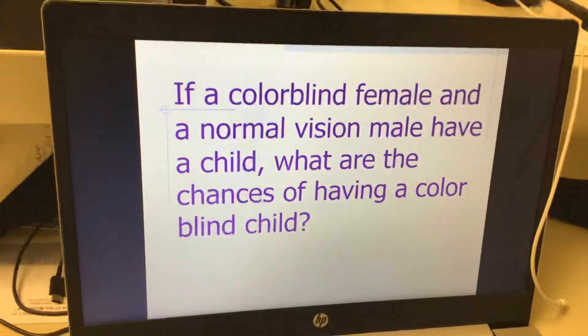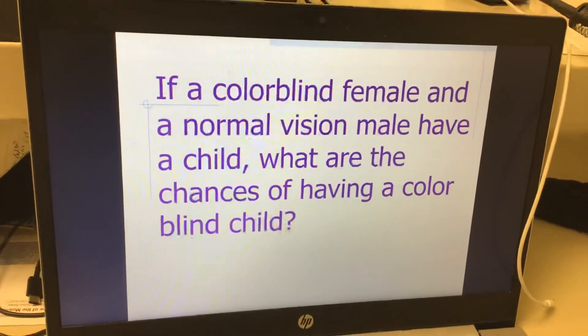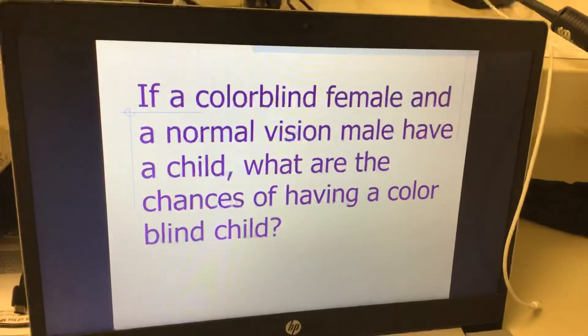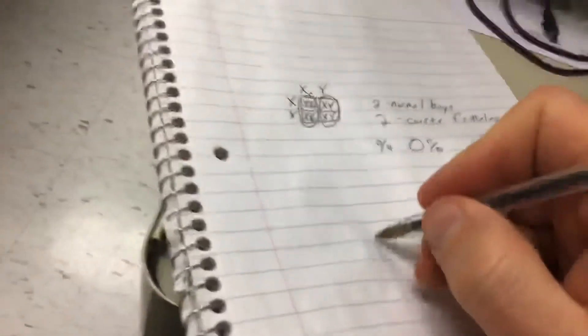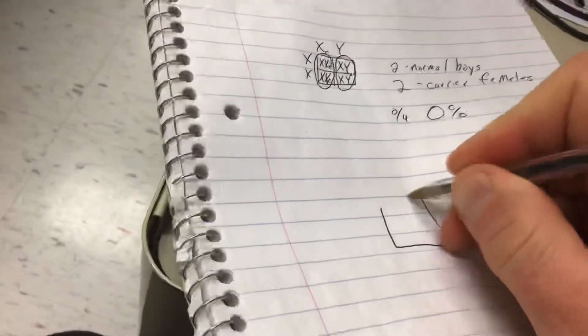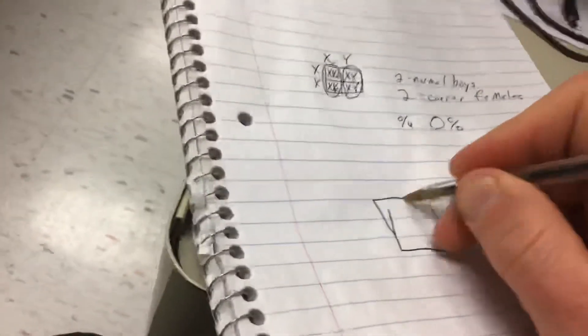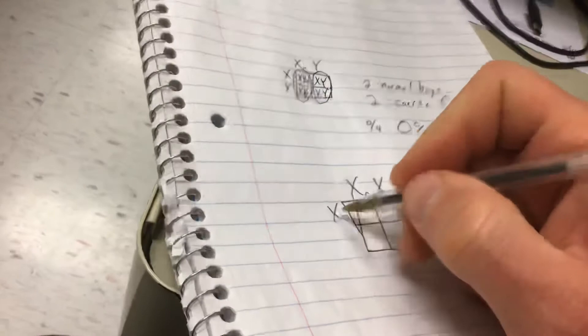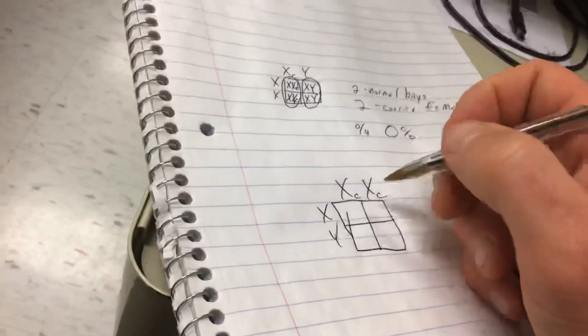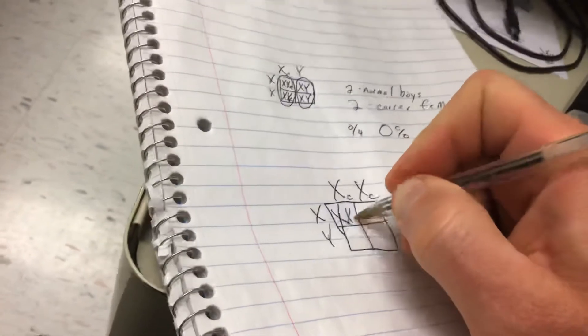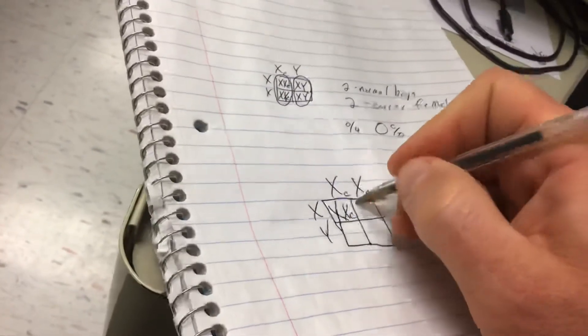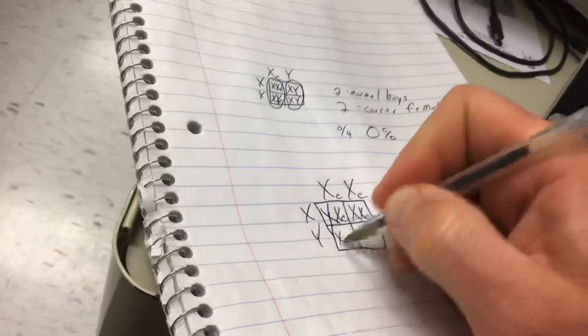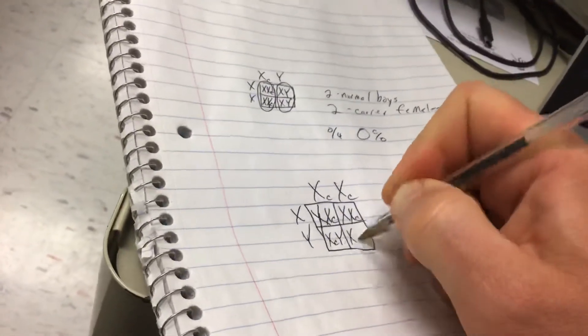Here's another example. If a colorblind female and a normal vision male have a child, what are the chances of having a colorblind child? We have a colorblind female. Female is XX. And so they both have to have colorblind trait there. And a normal male, it's XY. And when we cross them, we end up with that right there.